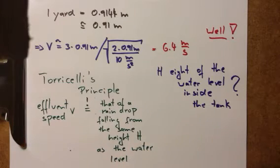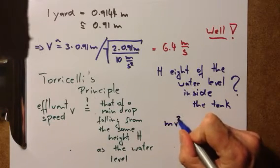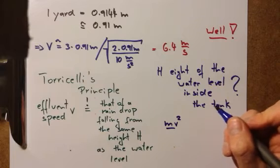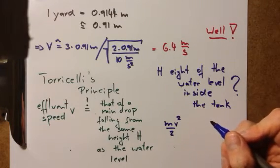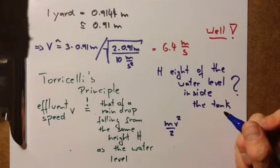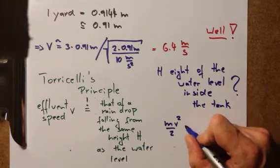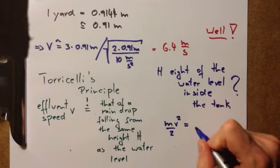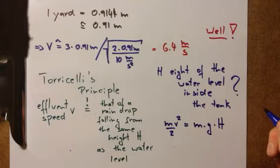And that's what we apply here, because we say that the kinetic energy of a droplet that has fallen through that height h, mv squared half, is the same kinetic energy as that of a droplet in that water stream that gushes out of the hole. And because of energy conservation, that's given by m times g times the capital H, the height of the water level.